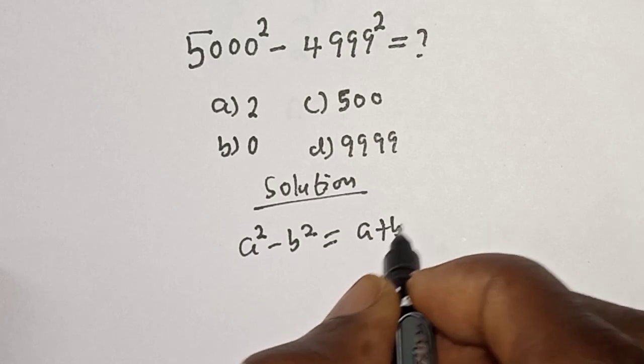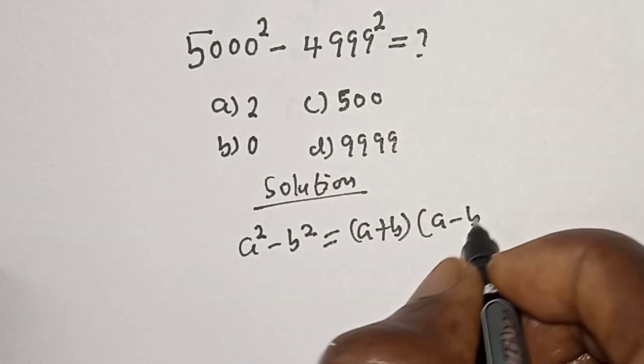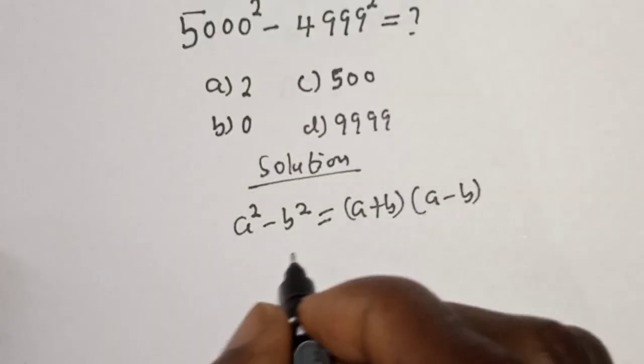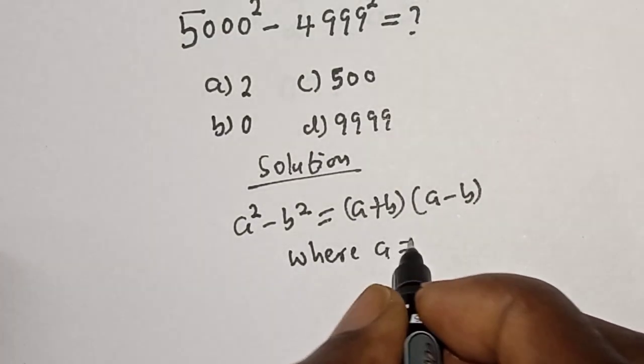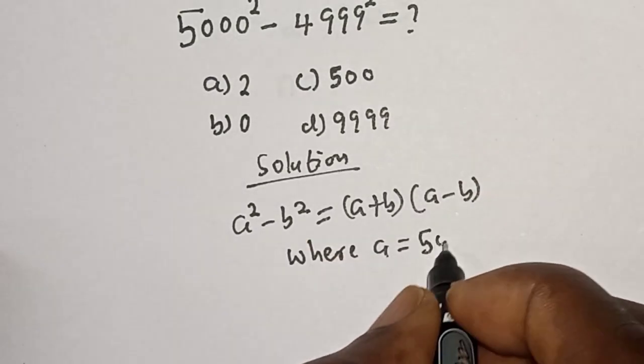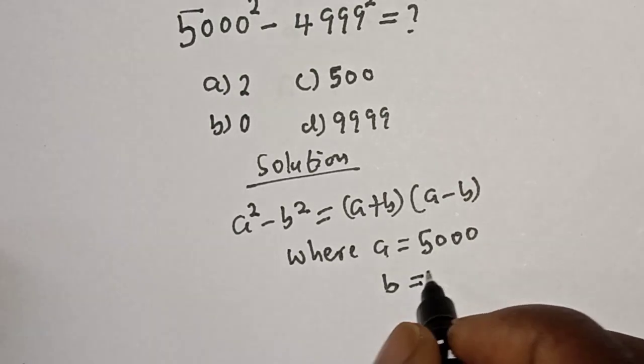Where a is equal to 5000 and b is equal to 4999.